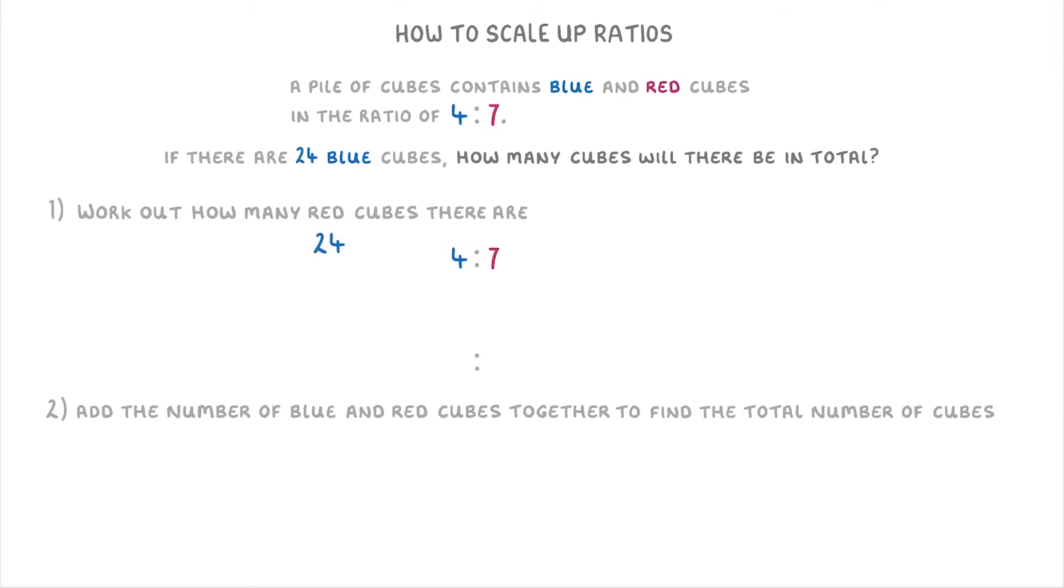Place the 24 underneath the 4 because we have blue cubes on the left, and figure out what has been multiplied by, which is 6. So we know we need to multiply the 7 by 6 as well to find out that there will be 42 red cubes. And then our final easy step is just to add the 24 and the 42 together to find that there must be 66 cubes in total.